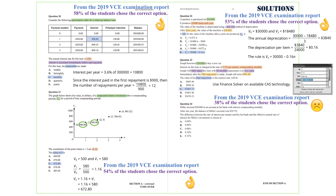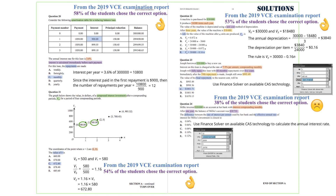Question 24. Millie invested $20,000 in an account at her bank with interest compounding monthly. After one year, the balance of Millie's account was $20,732. The question is asking for the difference between the rate of interest per annum used by her bank and the effective annual rate of interest for Millie's investment. We are going to use Finance Solver on available CAS technology to calculate the annual interest rate, with N equals 12, present value equals $20,000, payment per period equals 0, and future value equals $20,732. The number of periods is 12. We are now going to calculate the effective interest rate, EFF, 3.6 and 12, and that is equal to 3.66%. So the difference is 3.66 minus 3.6, which is 0.06%.